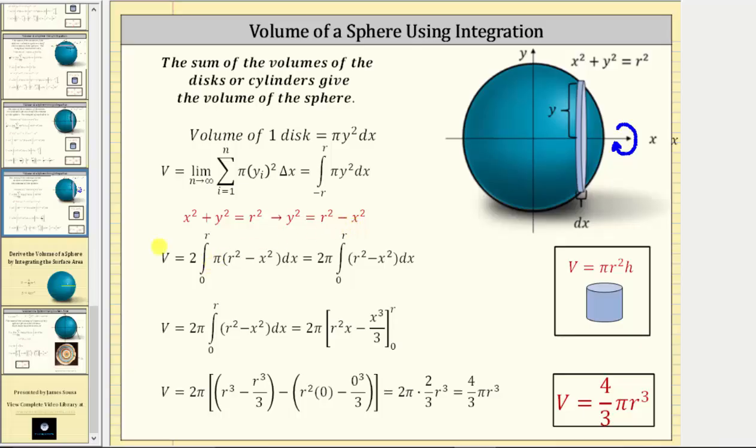So for this next line, we can say the volume equals two times integral from zero to r. This changes from integrating from zero to r rather than negative r to r. And then performing a substitution for y squared, we have r squared minus x squared here.